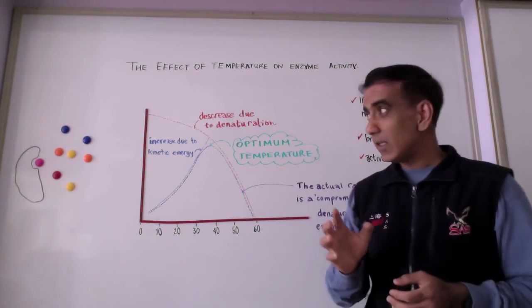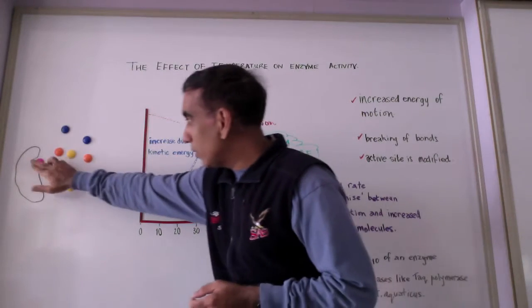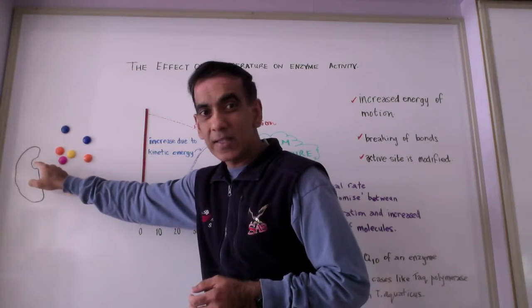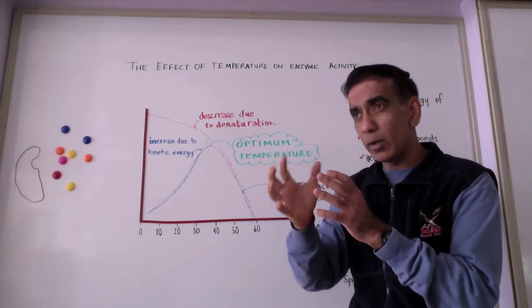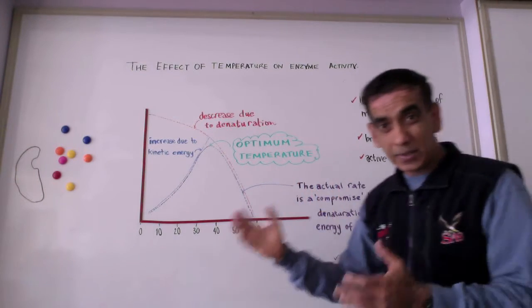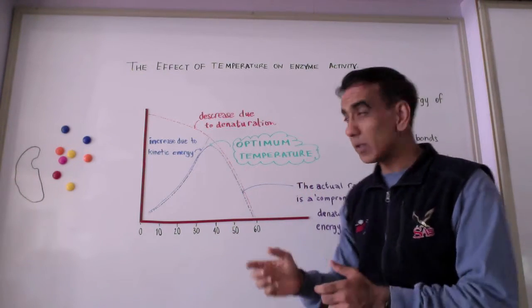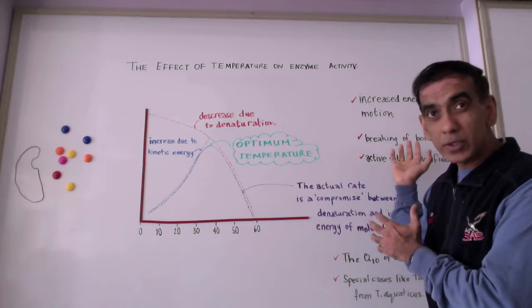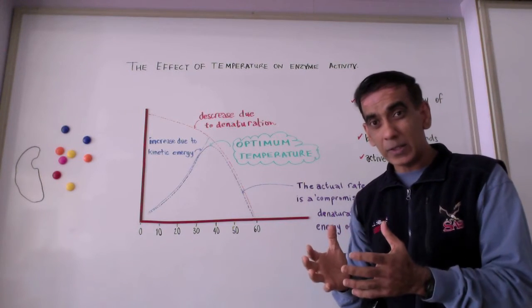Because enzymes are specific, each having a very unique active site made up by a very unique conformation of amino acids, as the rate of a reaction increases because of increased molecular motion and vibration, there is a balance or a compromise.